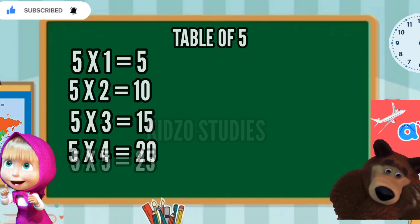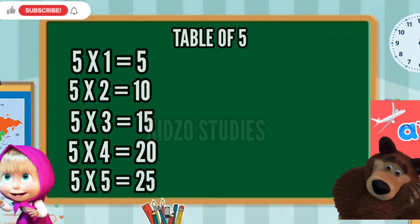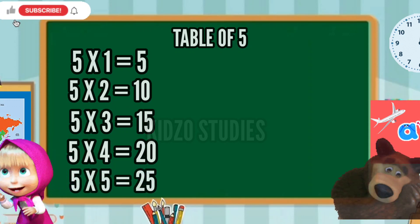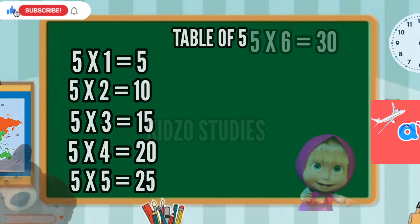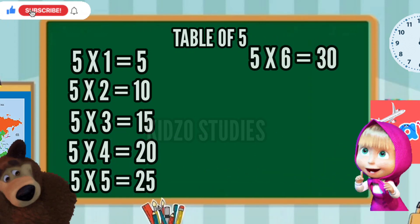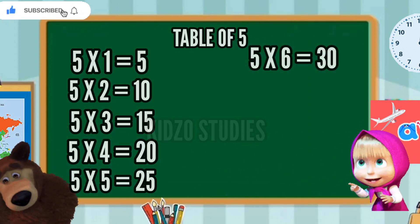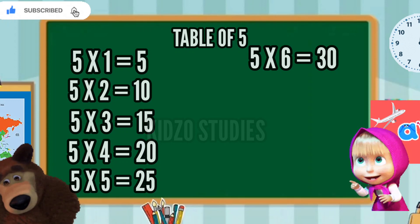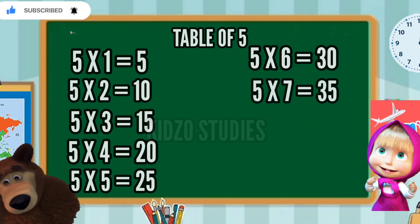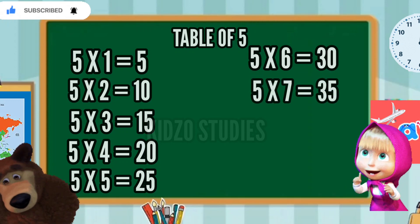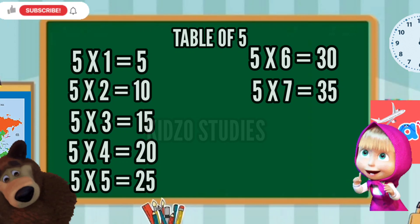5 5s are 25, 5 5s are 25. 5 6s are 30, 5 6s are 30. 5 7s are 35, 5 7s are 35.